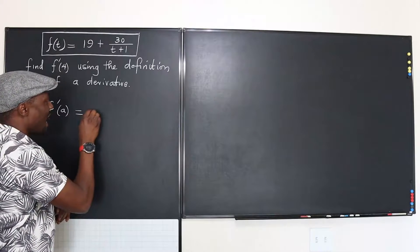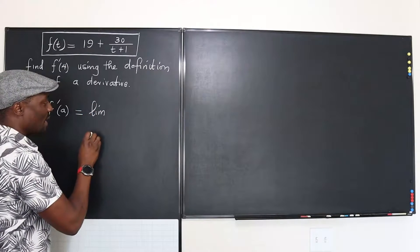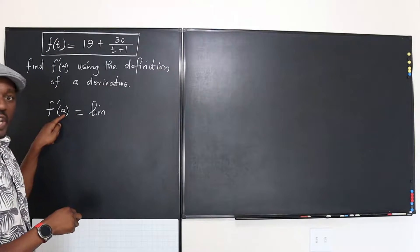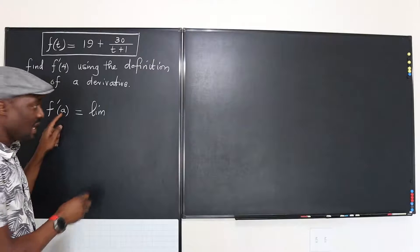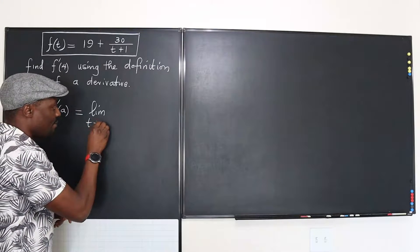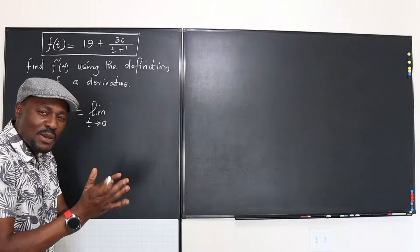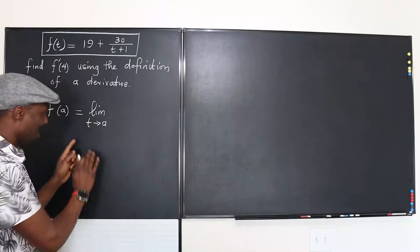It is usually defined as the limit, as your independent variable is approaching that point. The closer you get to that point, the more accurate your answer will be. So that's the idea.